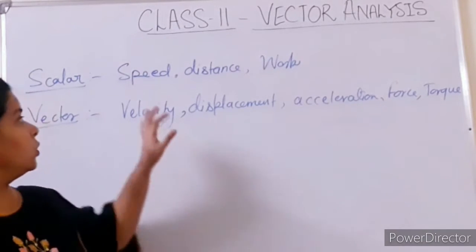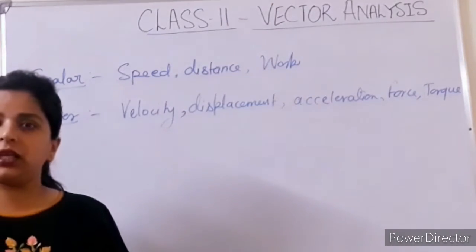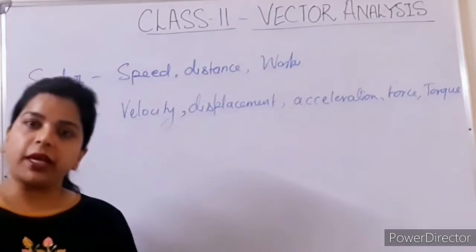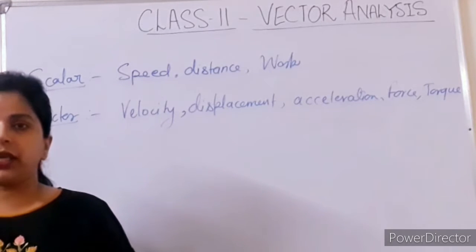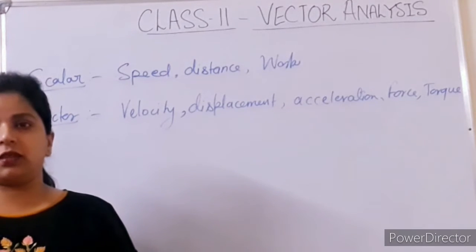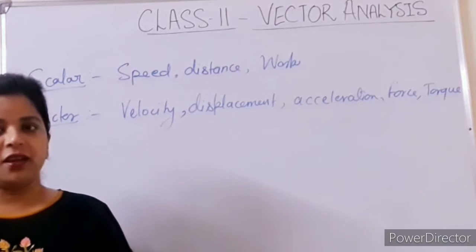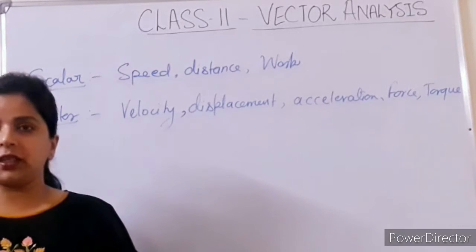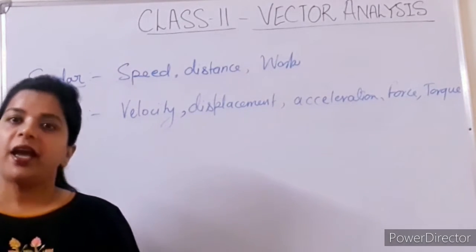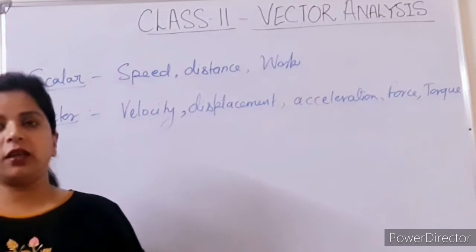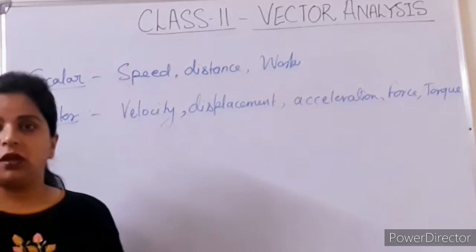First of all, you know about scalar and vector quantities — basically from 9th class you have heard about this. Scalar quantities are those which have magnitude but not direction. Vector quantities are those which have magnitude as well as direction. That is the basic difference between the two.